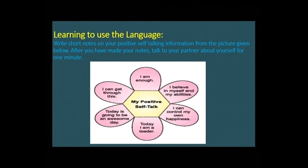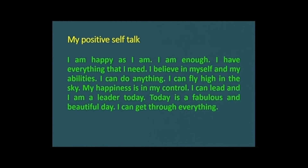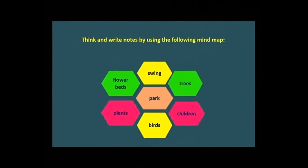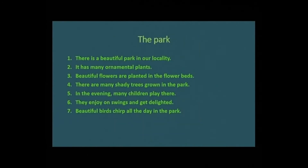Dear students, learning to use the language — here is a mind map and you need to talk to your partner about yourself for one minute. I am happy as I am. I am enough. I have everything that I need. I believe in myself and my abilities. I can do anything. I can fly high in the sky. My happiness is in my control. I can lead and I am a leader today. Today is a fabulous and beautiful day. I can get through everything. This is a mind map for the park: there is a beautiful park in our locality with many ornamental plants and beautiful flowers planted in the flower beds. There are many shady trees. In the evening, many children play there on swings. Beautiful birds chirp all day in the park.